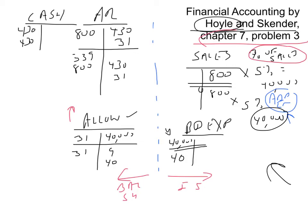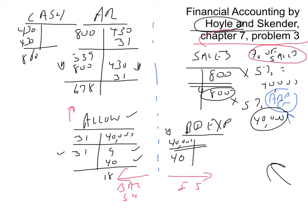The question asks for ending balances. Cash is $860,000 — just add the two $430,000 collections. Accounts receivable works out to $678,000. The ending allowance balance — you have a $31,000 debit, the $9,000 carry-forward, and the $40,000 credit — works back to an $18,000 credit. Sales is $800,000 and bad debt expense is $40,000. On the balance sheet: $678,000 in accounts receivable minus the $18,000 allowance gives a net realizable value of $660,000. That's how we do the percentage of sales method.